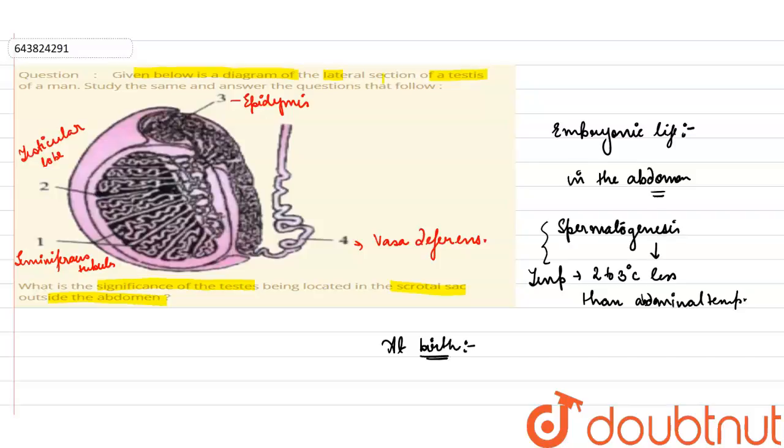The testis comes from the abdomen. It comes into the scrotal sac. Now when it comes into the scrotal sac, what happens?